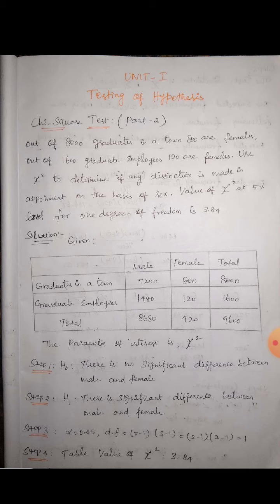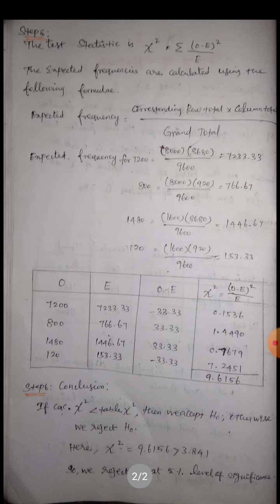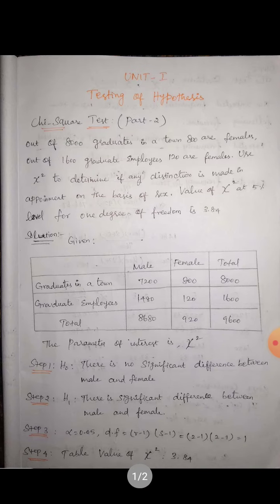Step five — the formula for the chi-square test is the summation of (O minus E) squared divided by E. Here we need to find the expected frequency. The formula for expected frequency is: corresponding row total multiplied by corresponding column total, divided by the grand total.